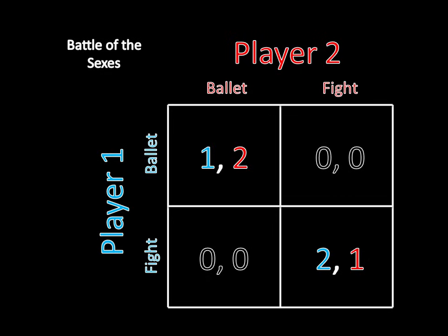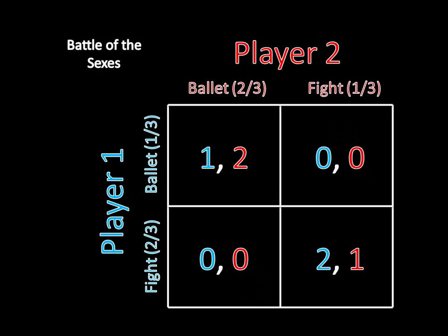Remember that in the last video we were looking at Battle of the Sexes. We saw that there are two pure strategy Nash Equilibria: one where both players go to the ballet, and another where both players go to the fight. We also saw that there was a mixed strategy Nash Equilibrium, where the man goes to the ballet with probability one-third and goes to the fight with probability two-thirds, whereas the woman, player two, goes to the ballet with probability two-thirds and the fight with probability one-third.